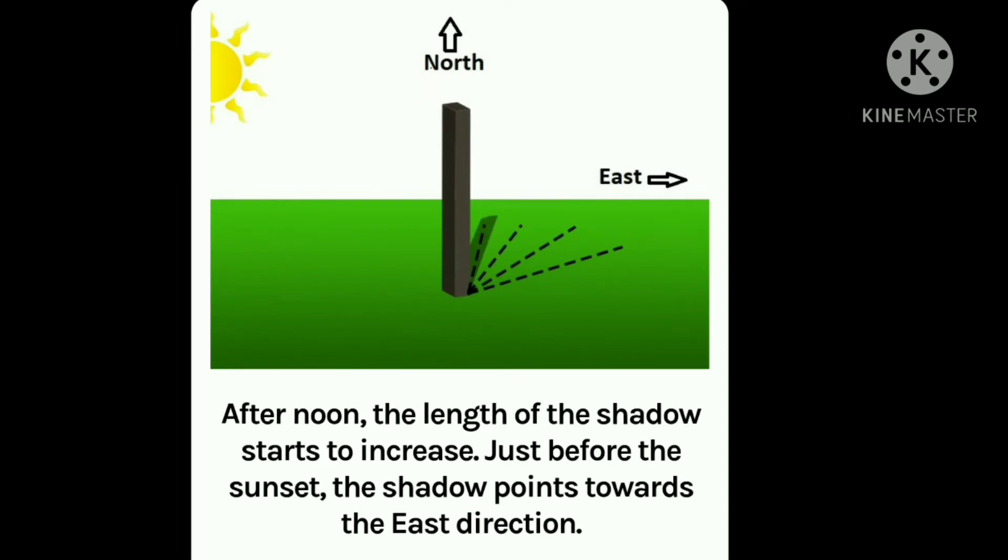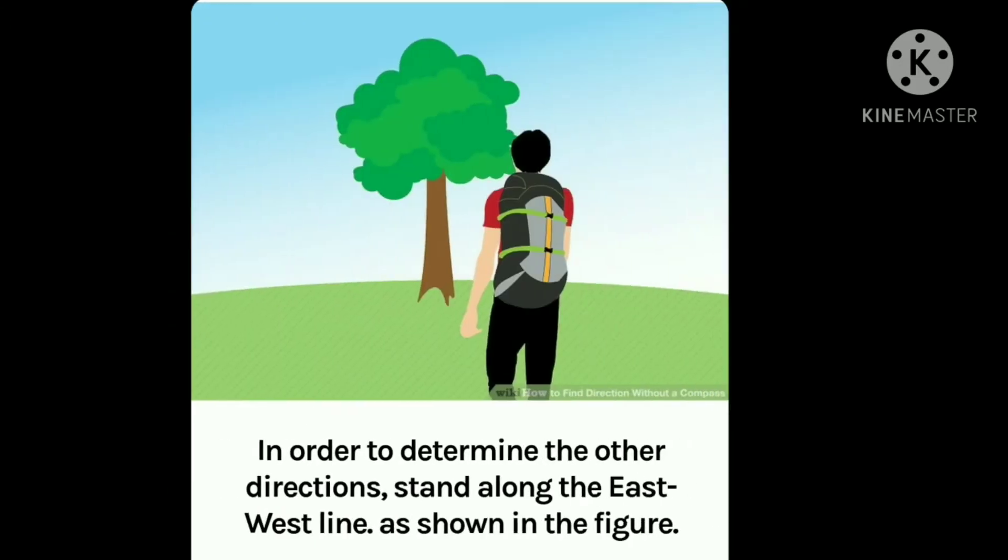After noon, the length of the shadow starts to increase. Just before sunset, the shadow points towards the east direction. In order to determine the other directions, stand along the east-west line as shown in the figure.